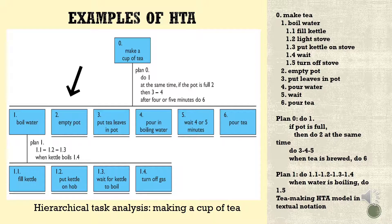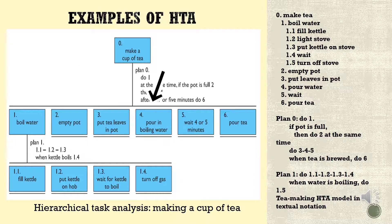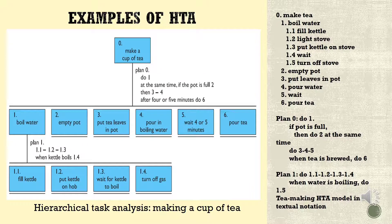Plan 2: empty pot. Plan 3: put tea leaves in pot. Plan 4: pour boiling water. Plan 5: wait 4 or 5 minutes. Plan 6: pour tea. This plan demonstrates making an HTA model in textual notation for making a cup of tea.